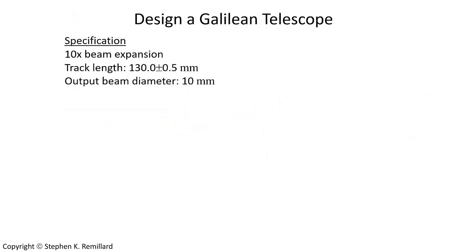Let's design a Galilean telescope. We want a factor of 10 beam expansion. We'll set the total track length to 130 millimeters, and we'll have an output beam diameter of 10 millimeters, which means that the input beam has a diameter of 1 millimeter.